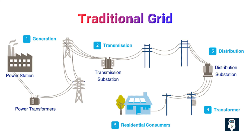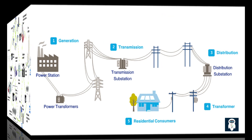Moreover, working on conventional grid networks poses security and safety risks for operators, especially during adverse weather conditions. These risks can lead to injuries or even fatalities, further highlighting the need for a more advanced and safer grid infrastructure. Lastly, traditional grids lack visibility into power flow data and other important grid characteristics, making it difficult to optimize performance and reduce operating costs.